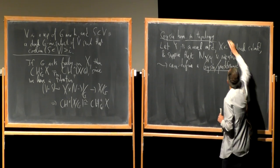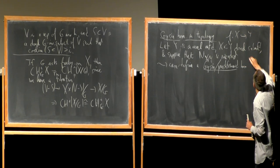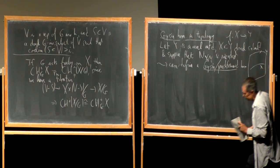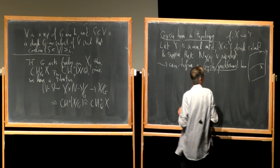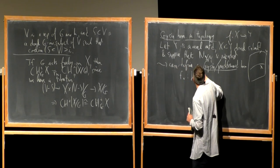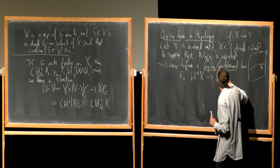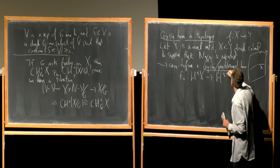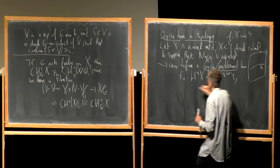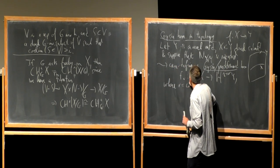If the inclusion is called f from X to Y, then f_* goes from the cohomology of X to the cohomology of Y, but with a shift in degree by R, where R is the codimension of X in Y.